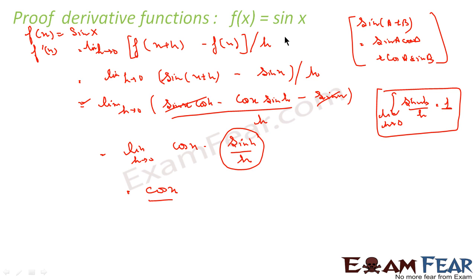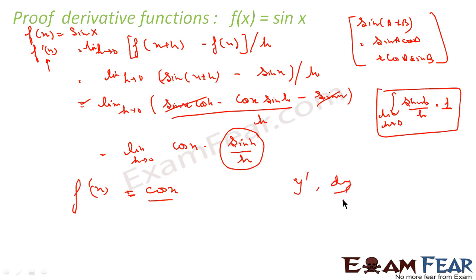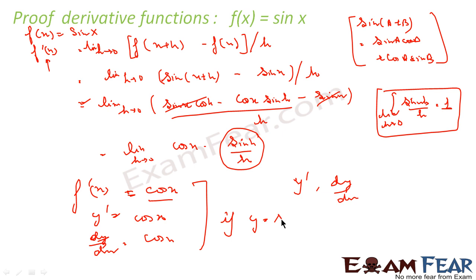Since sin h/h → 1 as h→0, the whole thing becomes cos x. So f'(x) = cos x. Just to remind you, f'(x) is the same as y' or dy/dx. So if f(x) = sin x, then f'(x) = cos x, or equivalently dy/dx = cos x.